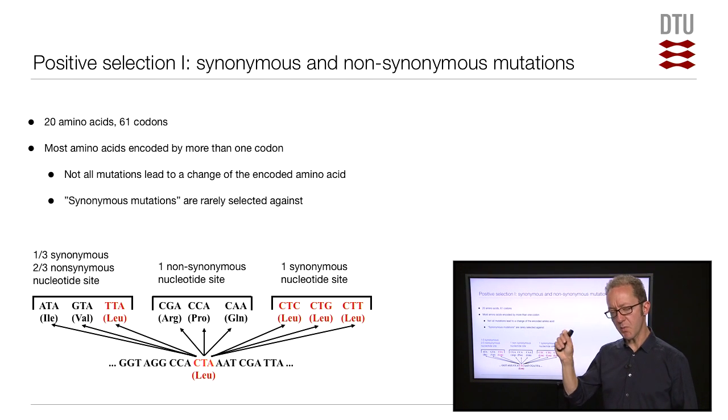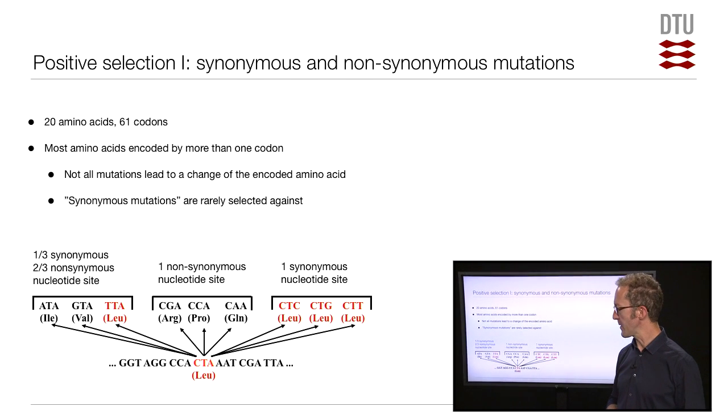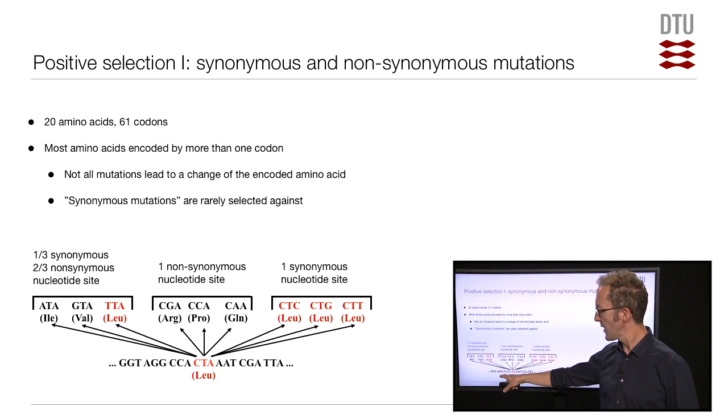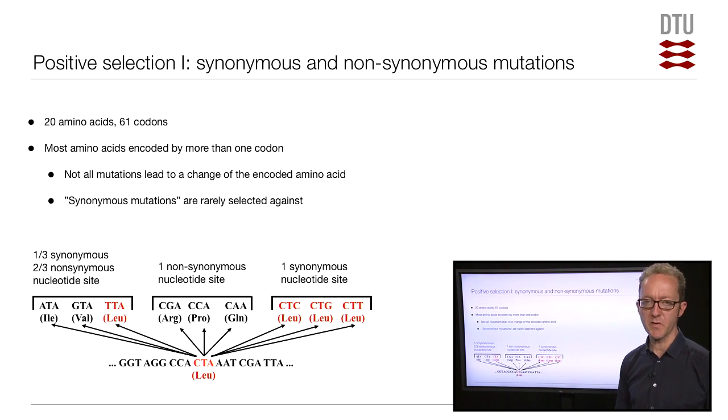And you will do that in the following manner. I will need to first introduce some terminology, and then I'll explain the model that we use to look for selection. So let's say you have some DNA sequence like the one I've indicated at the bottom of the slide. It's a protein-coding DNA sequence. I've written it up as a number of codons, and let's start by focusing on this one codon, CTA, which encodes leucine.